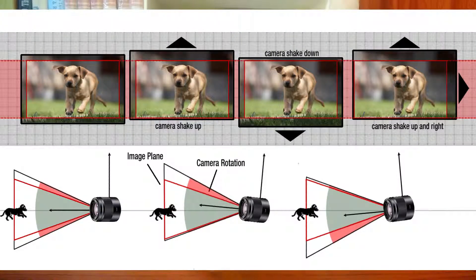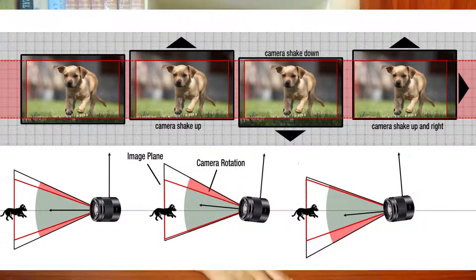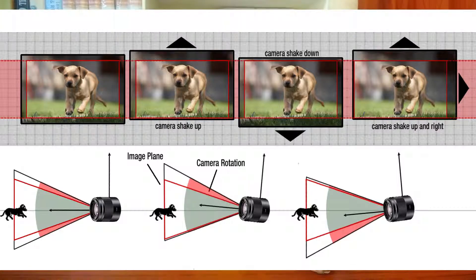In the low budget category like 10,000 or 20,000, phones use electronic image stabilization. EIS crops the video — when you shake the video and after it is processed, you can see it appears as if you are zooming in, meaning it is cropping the frame. This is what happens in electronic image stabilization. The first phone to implement optical image stabilization was the Nokia Lumia 920.